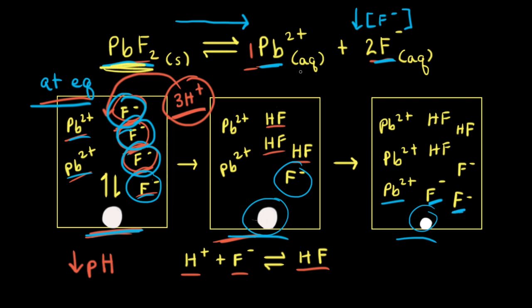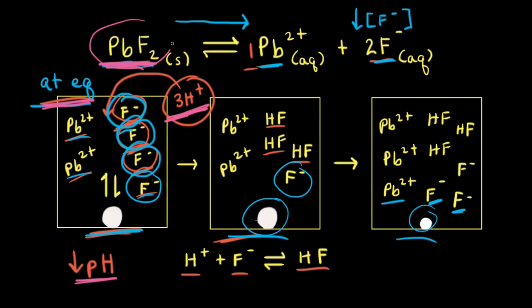The solid keeps dissolving and the concentration of ions keeps increasing in solution until the system reaches equilibrium. So for a saturated solution of lead(II) fluoride at equilibrium, decreasing the pH — making the solution more acidic by increasing the concentration of H⁺ ions — increases the solubility of lead(II) fluoride. This is why we saw more of the solid dissolve when the H⁺ ions were added. This effect of decreasing pH and increasing solubility happens whenever the slightly soluble salt contains a basic anion.